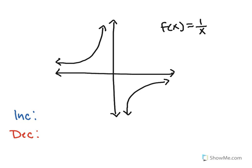Let's look at another problem: f(x) = 1/x. Starting from the left branch — picking a point here, the slope is positive, and as I move farther to the right the slope stays positive. Points on this branch are all increasing, even if the picture doesn't make it entirely obvious.